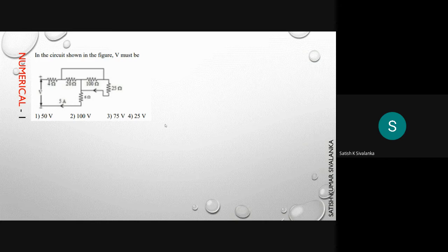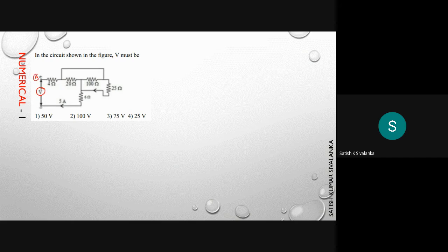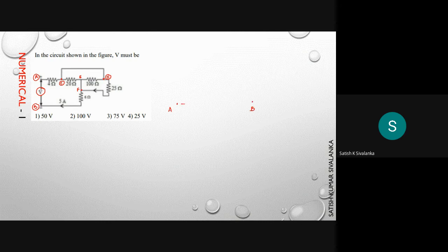The first numerical in video 3.2: the circuit shown in figure — V must be. What is the value of V? If you see this circuit, it appears to be quite complex, but it is a very simple network. We name the corners: let this be A, this be B, here we have a junction C, another one D, this is E, this is F. I draw A here and B here. Ultimately, you need to find the potential difference between terminals A and B.